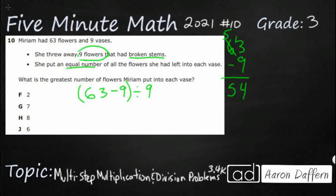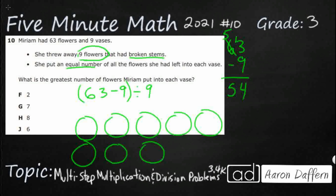So we have 54 left and 9 vases. Let me draw circles — pretend these are vases. We put an equal number of all flowers into each vase. The question asks: what is the greatest number of flowers she put into each vase? The greatest number means we're going to use as many as we can until we run out, but it has to be an equal number in each one. So really what we're looking at now is 54 divided by 9.